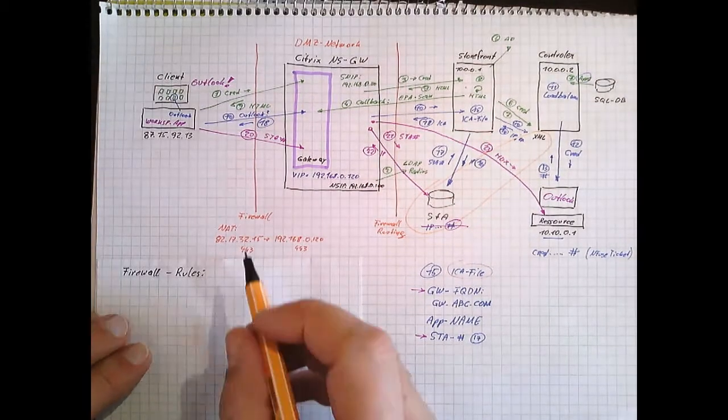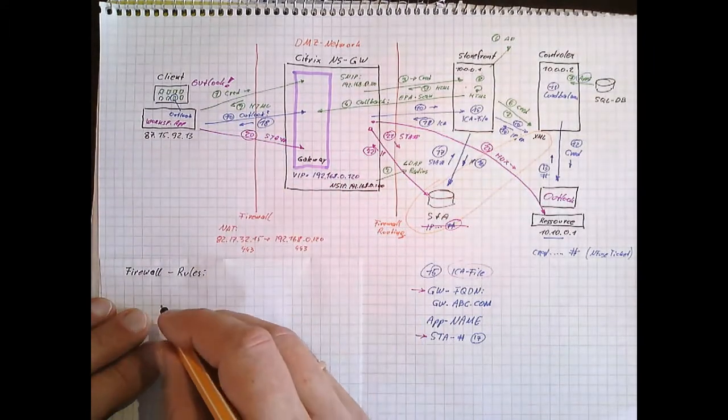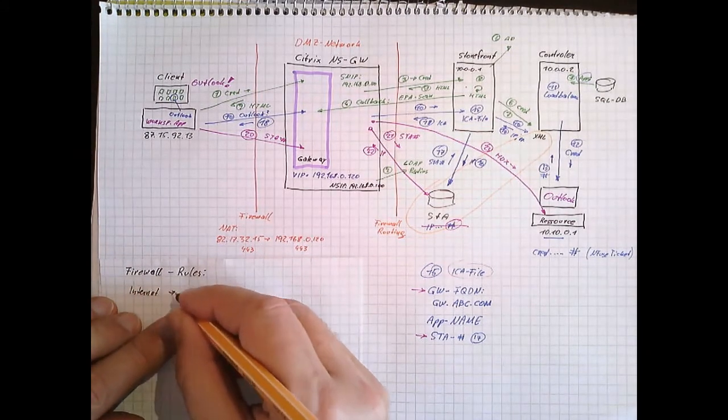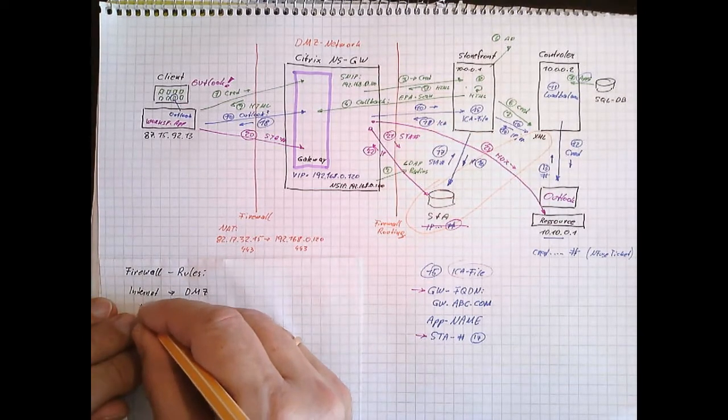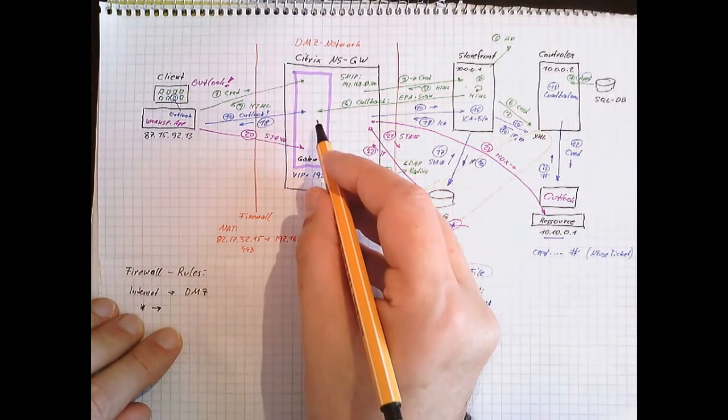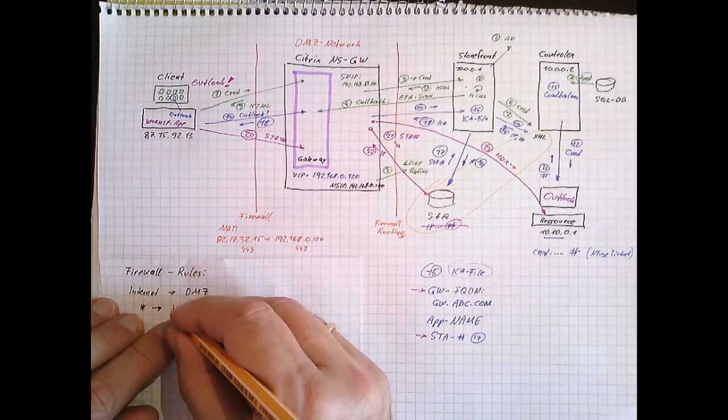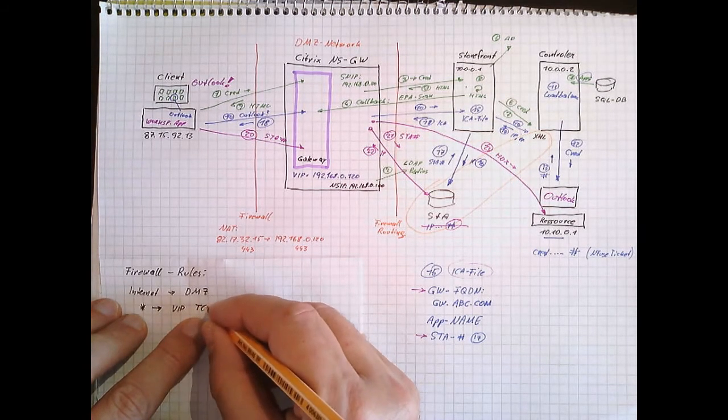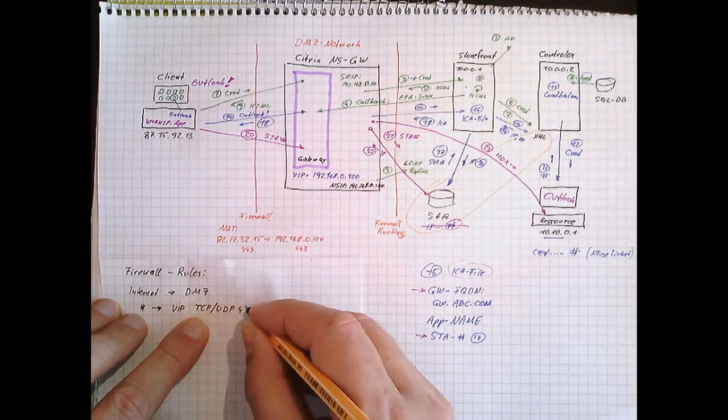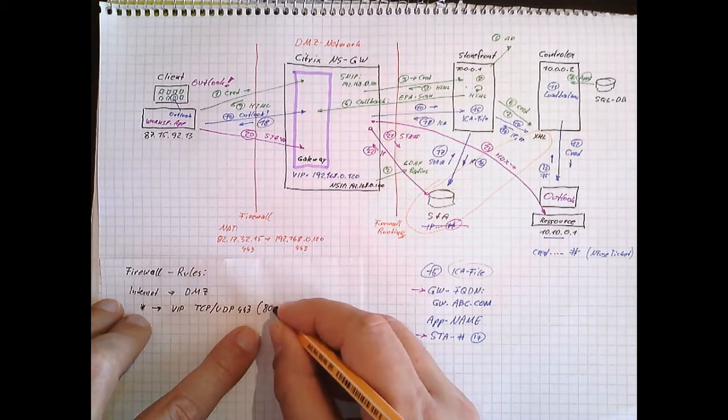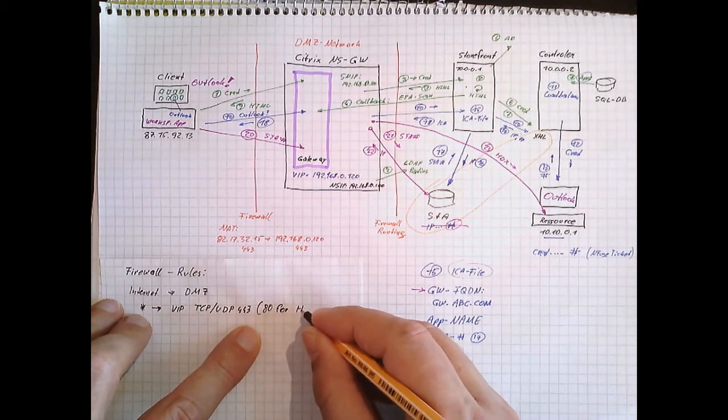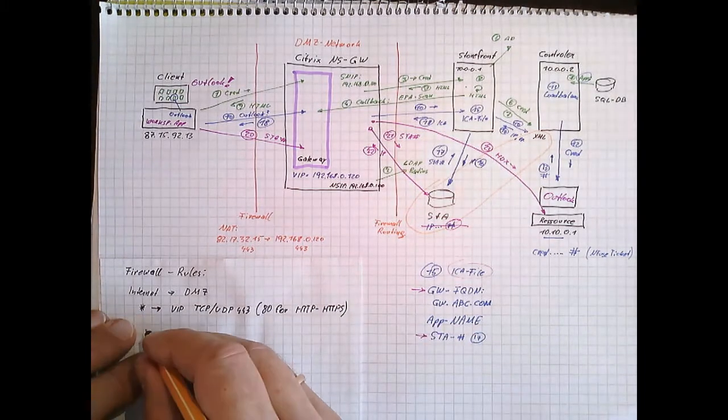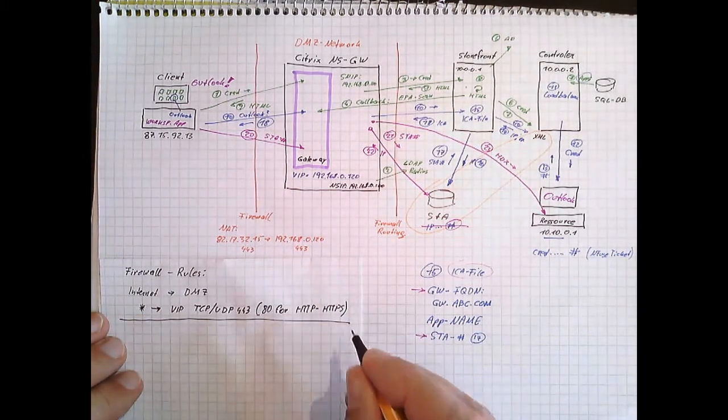So time to define firewall rules. There are connections from outside to inside. This is from any IP address, from internet to the DMZ network. This is from any IP address to the virtual IP address of the gateway server. TCP or UDP. So this is important to not forget UDP. Port 443. We might use port 80 for redirection. This is convenient for the users, HTTP to HTTPS redirection. That's it.